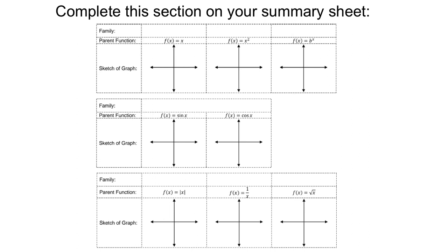You can write this next part on your summary sheet. I'm going to show you all the different parent functions for all the different function types we're going to talk about in this course. The first two you've seen already: linear functions have f of x equals x as their parent function — the simplest function looks like a straight line up and to the right. Quadratic functions have x squared as the parent function, and you have a parabola that opens up with its vertex at the origin, (0, 0).